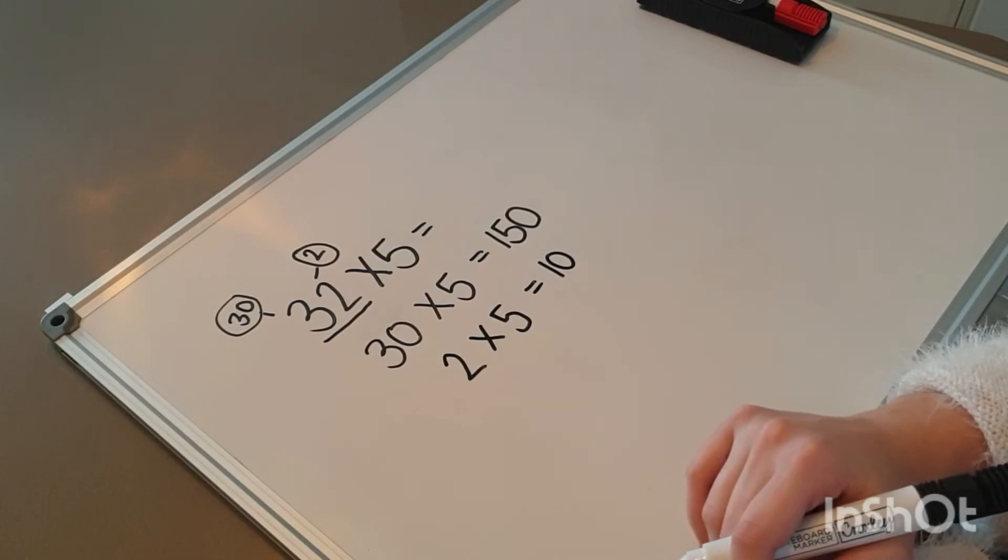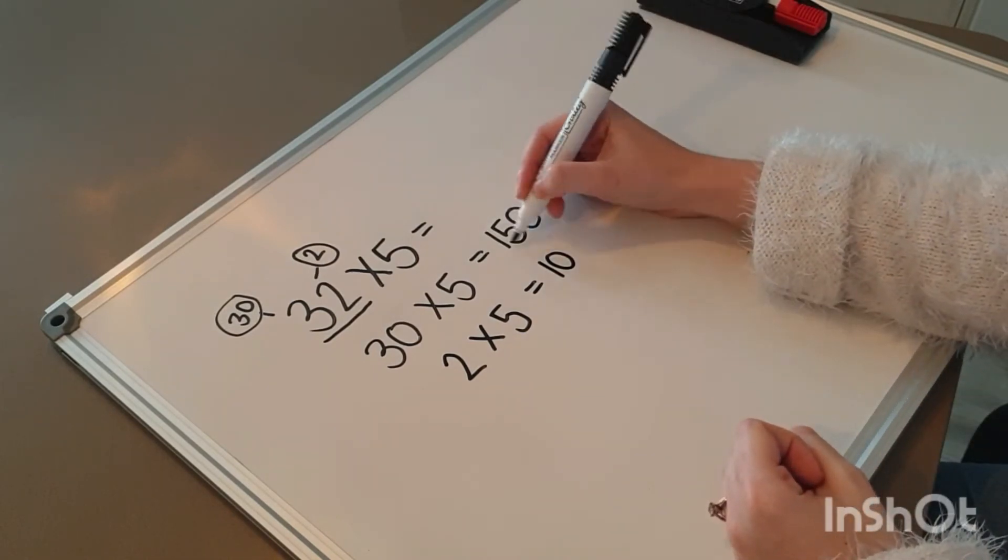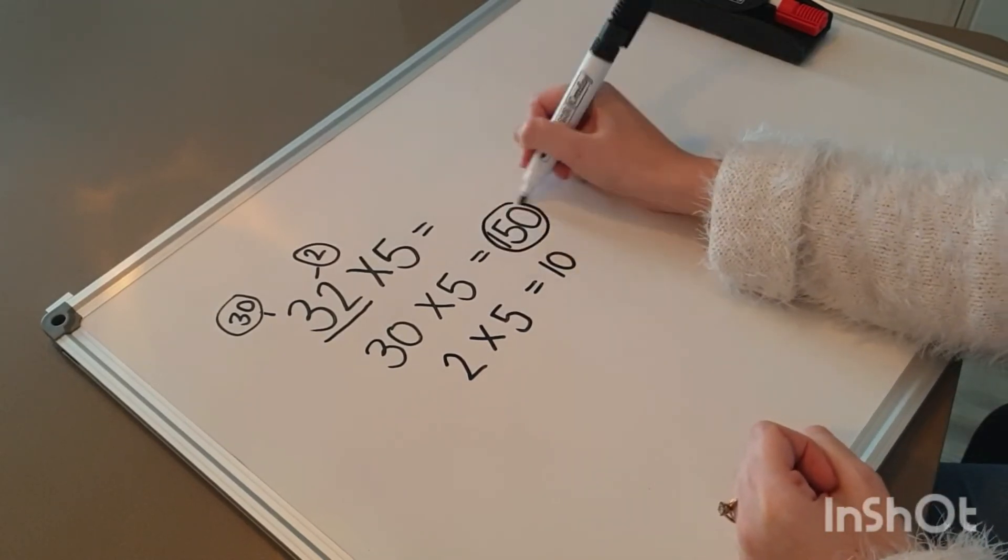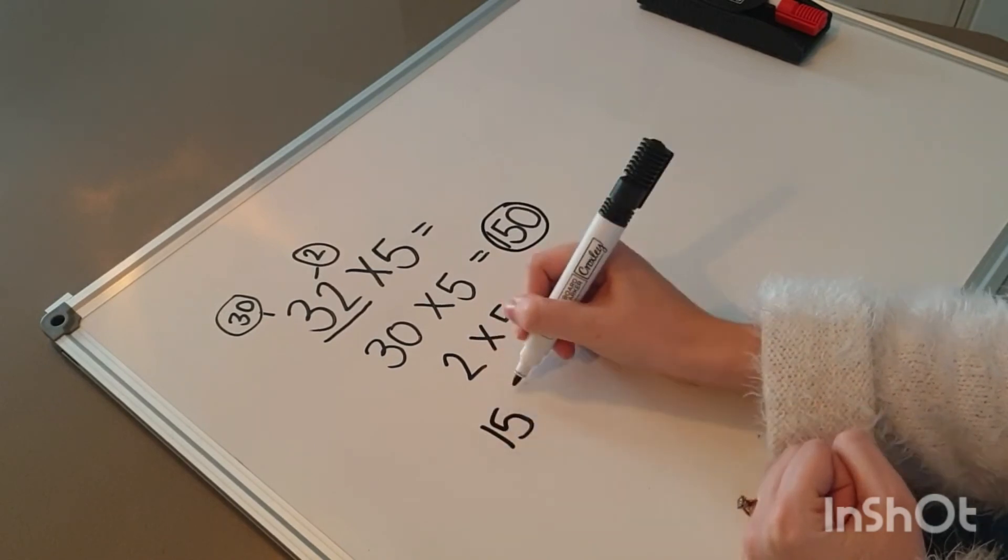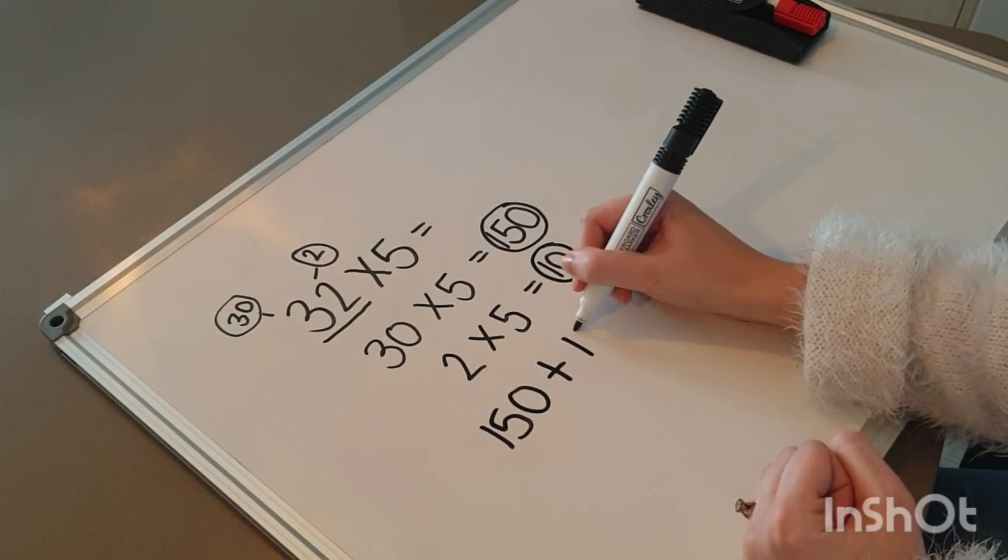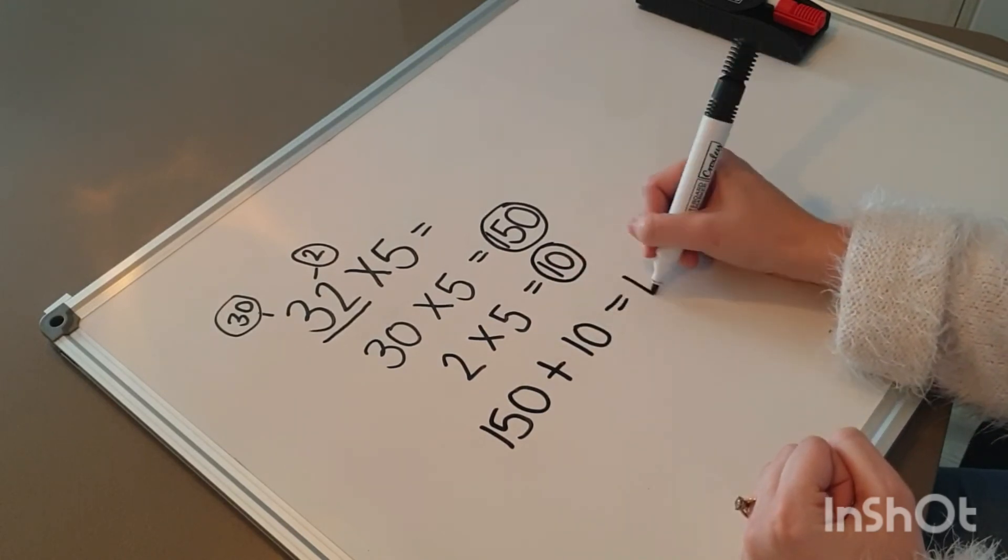But now to get my answer, I have to add the totals of these two answers together. So, 150 plus 10 equals 160.